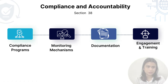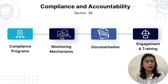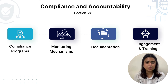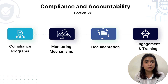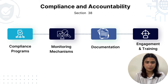Coming to Section 38, that is compliance and accountability. The first action step is to have compliance programs. We have to develop and implement comprehensive compliance programs aligning with the DPDP Act. For example, SAP has developed a global compliance program to ensure all operations meet regulatory frameworks and requirements, including data protection. Compliance programs ensure all organizational practices align with the DPDP Act.